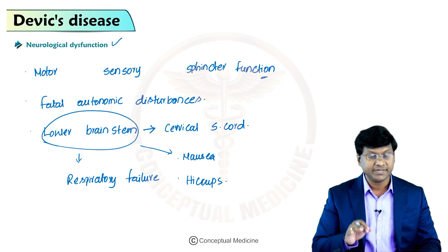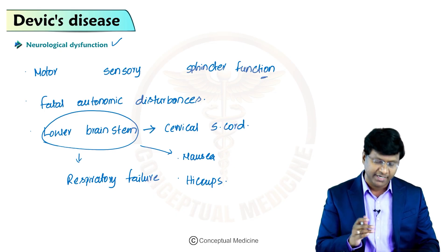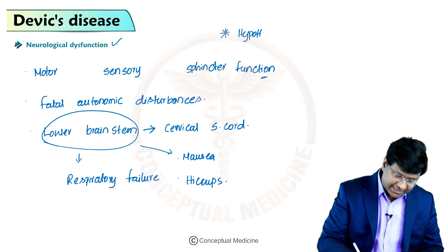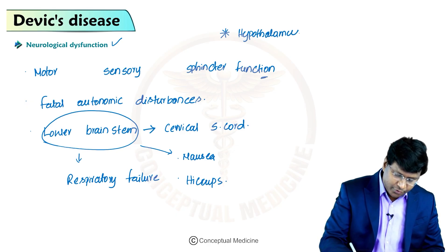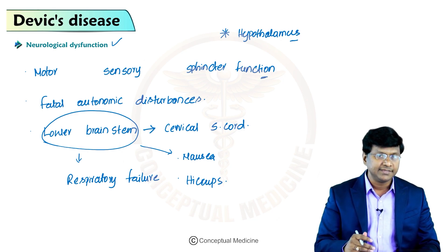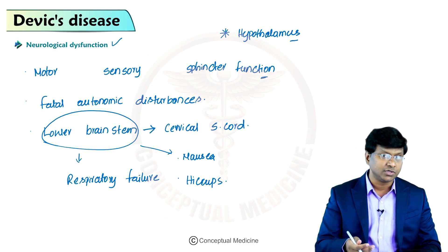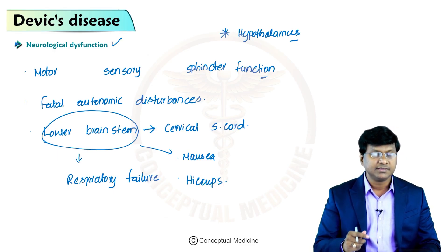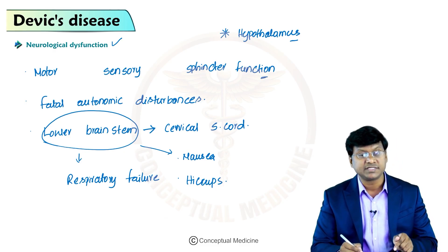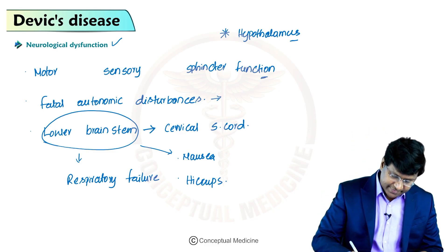Apart from lower brainstem involvement, in some cases the hypothalamus and other areas of the brain are also involved. The autonomic disturbances may occur due to involvement of autonomic outflow in thoracic myelitis — because the sympathetic nervous system is the thoracolumbar outflow.